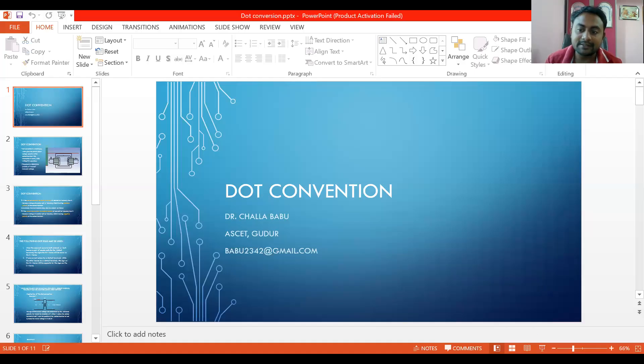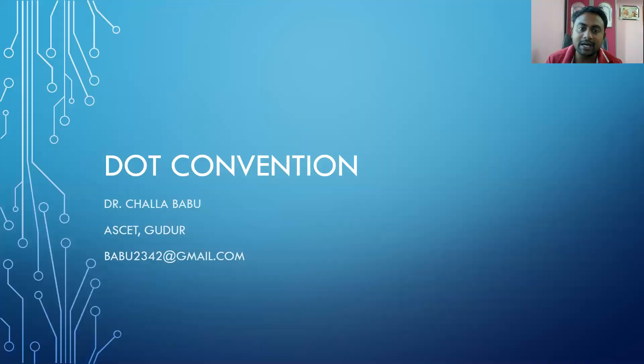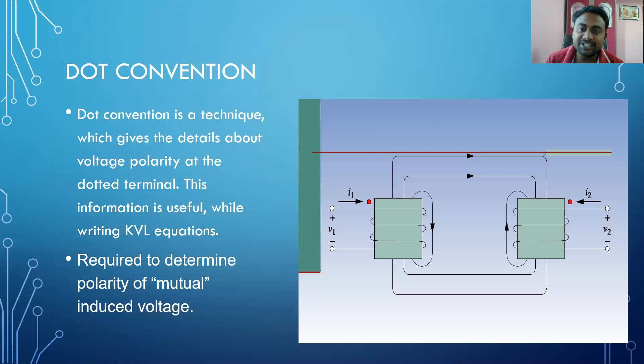Good morning. Hope you're already doing good today. In this video I'm going to explain about the dot convention. A dot convention is a method which is used to find the sign of mutual inductance — that is, either it is following the positive sign or negative sign. For that reason only, we are using the dot convention. In each and every coil we have to place the dot either at the current entering side or current leaving side — wherever you want, you can place it.